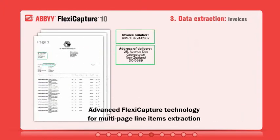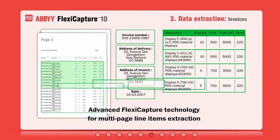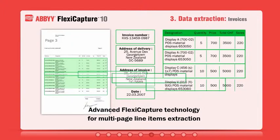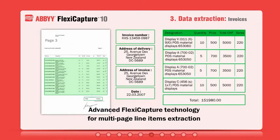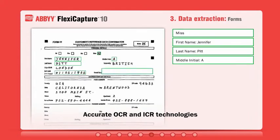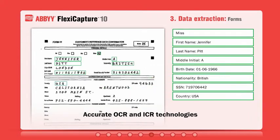FlexiCapture is able to extract data from any kind of document, including those with complex structures like invoices and multi-page documents. ABI's award-winning optical character recognition and intelligent character recognition technologies ensure exceptional accuracy.